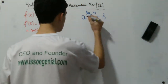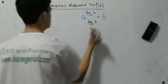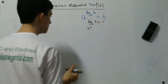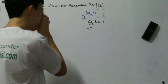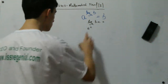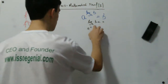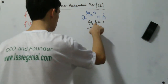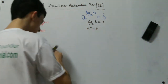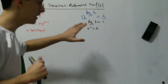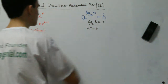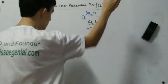Another way of saying this: let's call log base a of b equal to c. So a raised to c — what is a raised to c? We know from logarithms that if this logarithm is equal to c, then the number to which we raise a to result in b is c. So if we raise a to c, the result is going to be b. Remember: a raised to log base a of b is equal to b.